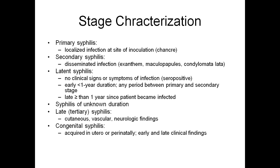Regarding the stages: primary syphilis is a localized infection at the site of inoculation, called a chancre. Secondary syphilis is a disseminated infection with exanthem, maculopapules, and condyloma lata. Latent syphilis has no clinical signs or symptoms of infection but the patient is sero-positive. Early latent syphilis is less than one year in duration — any period between primary and secondary stage.